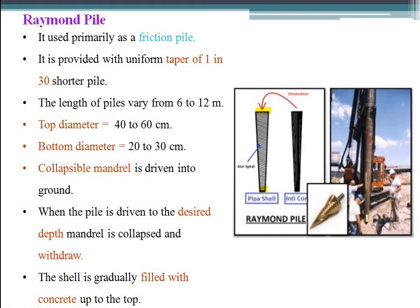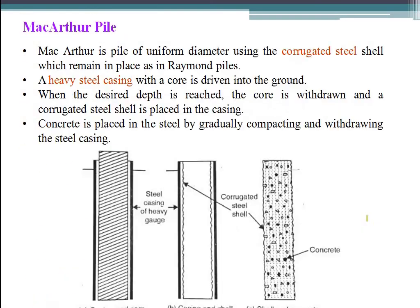The shell is gradually filled with concrete up to the top. MacArthur Pile is of uniform diameter using a corrugated steel shell which remains in place, similar to Raymond piles. A heavy steel casing with a core is driven into the ground. When the desired depth is reached, the core is withdrawn and a corrugated steel shell is placed in the ground. Concrete is placed in the casing and compacted while the steel casing is gradually withdrawn.